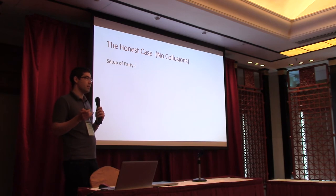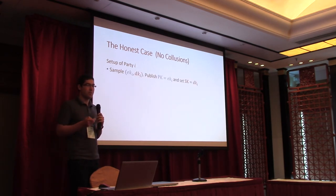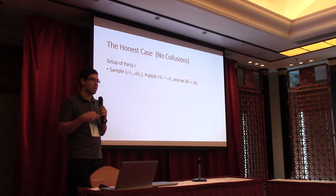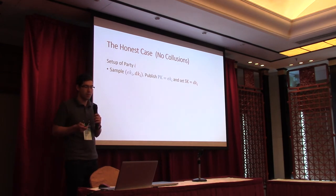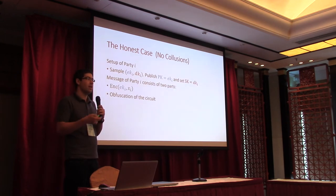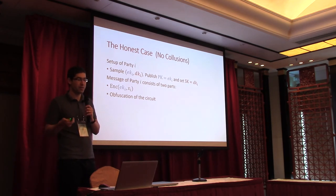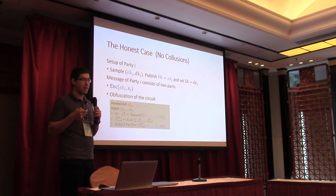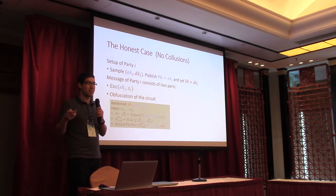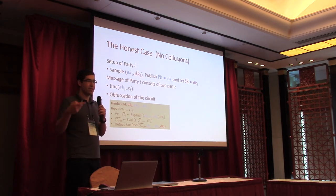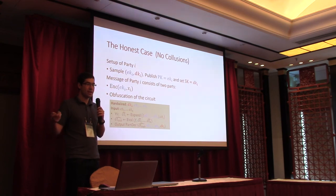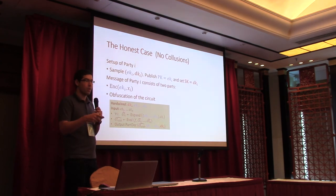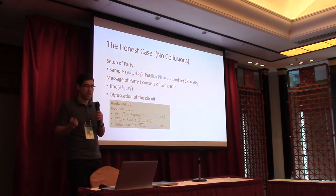Let's start with the honest case where there's no collusion. Party i will sample an encryption key and decryption key for the multi-key FHE scheme. The message that party i sends is just an encryption of its private input under the encryption key, and an obfuscation of a circuit — this is where we use iO. The circuit does exactly what you expect: it takes the ciphertexts as input, expands them into the expanded ciphertext, does homomorphic evaluation, and eventually does the partial decryption. It has the decryption key hardwired inside for the partial decryption.